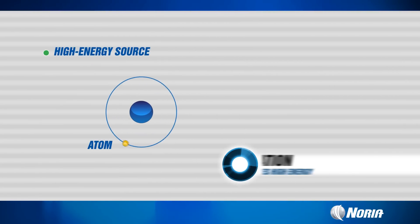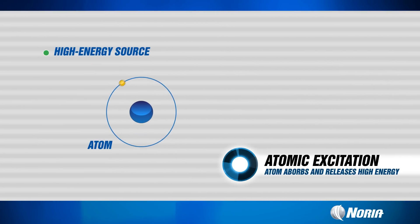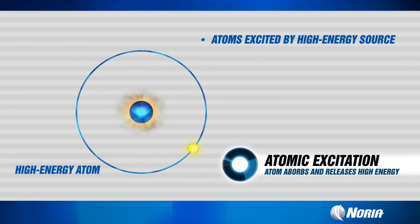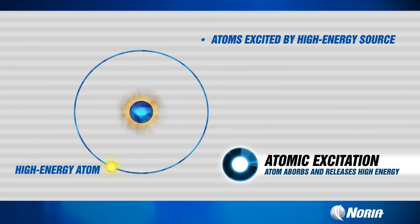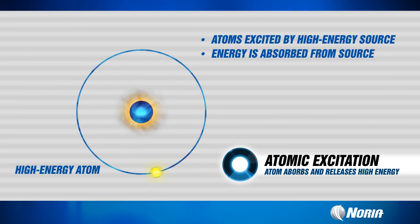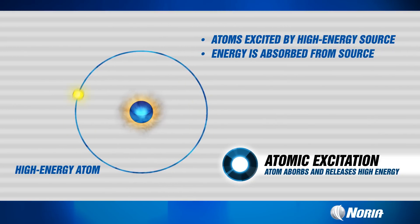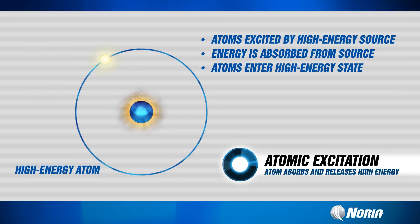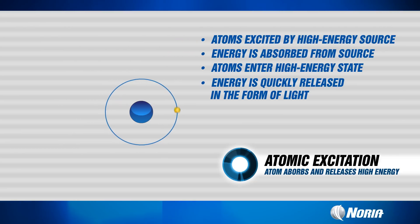The way elemental analysis works is through the principle of atomic emission spectroscopy, or AES. Through this process individual atoms within the samples are excited using some type of high energy source. We're going to talk about two of those types today. The atoms absorb the energy from the excitation source and are transformed into high energy electronic states. According to the laws of quantum physics, the atoms don't like being in that state, so they rapidly lose that energy by emitting light.